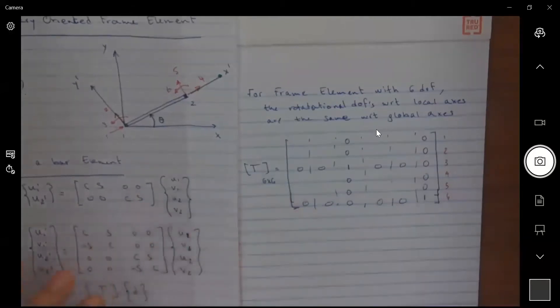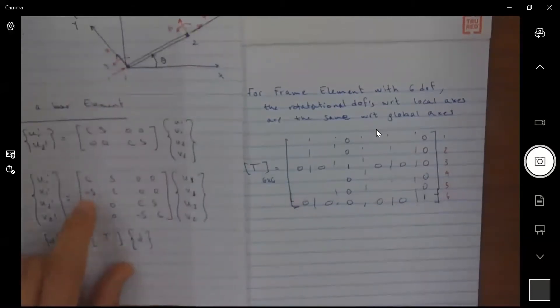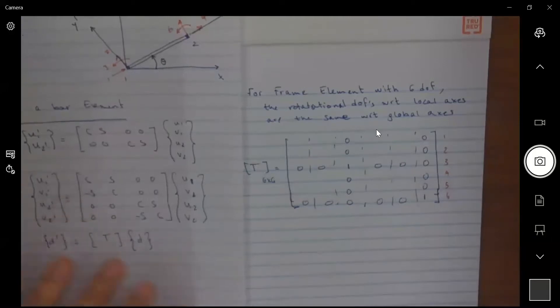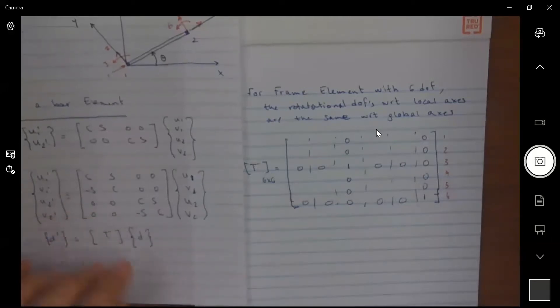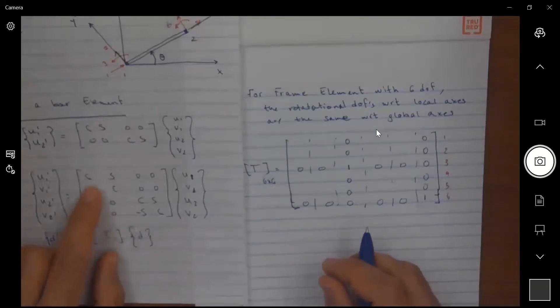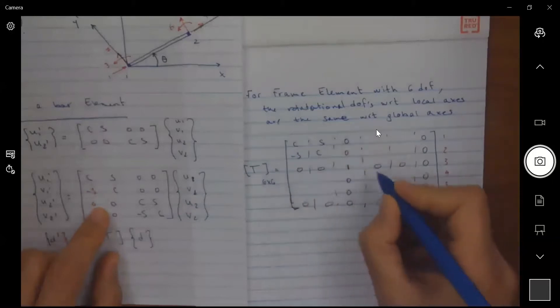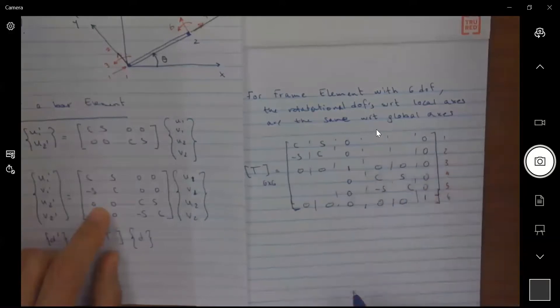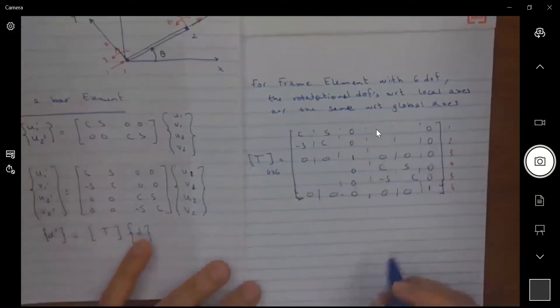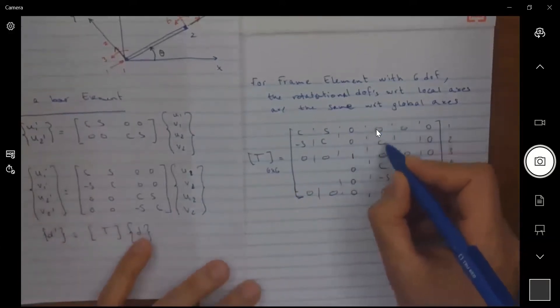And for the remaining four degrees of freedom, I'm basically gonna use T for the bar element or for any vector here. So I'm gonna get the c s minus s c, c s minus s and c, and here we're gonna get more zeros.